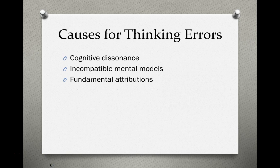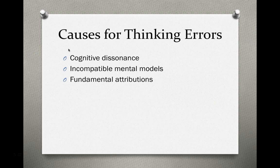So why do we engage in these thinking errors? It's not because we're bad people — we're just too busy and we rely on things. The first reason is cognitive dissonance. Cognitive dissonance relates to when related conditions are inconsistent or contradictory with one another, and this inconsistency produces tension. What you'll do is reduce tension by altering your cognitions or your thoughts.